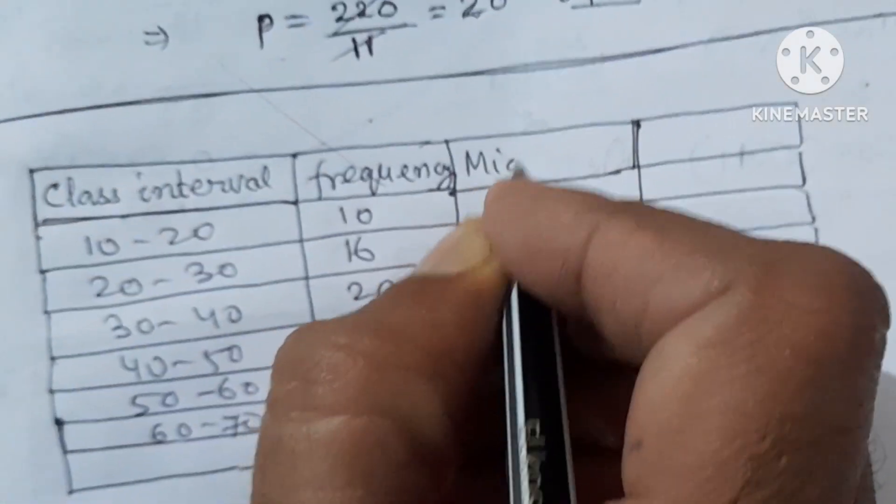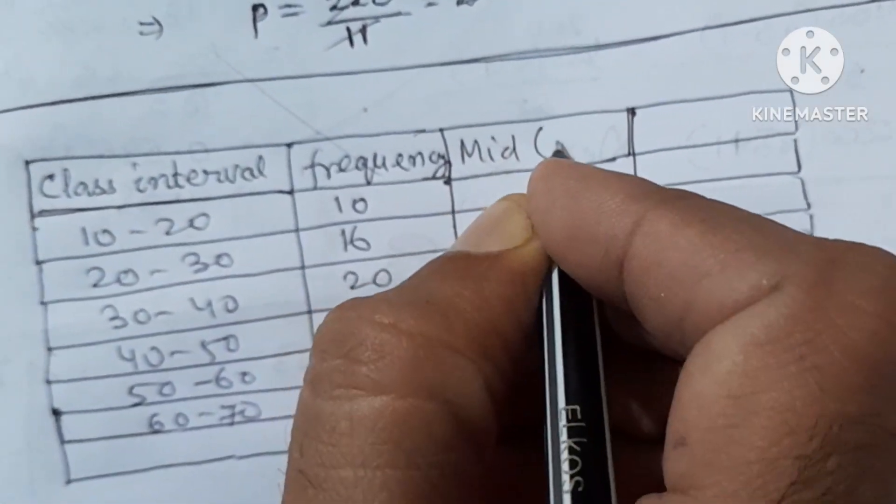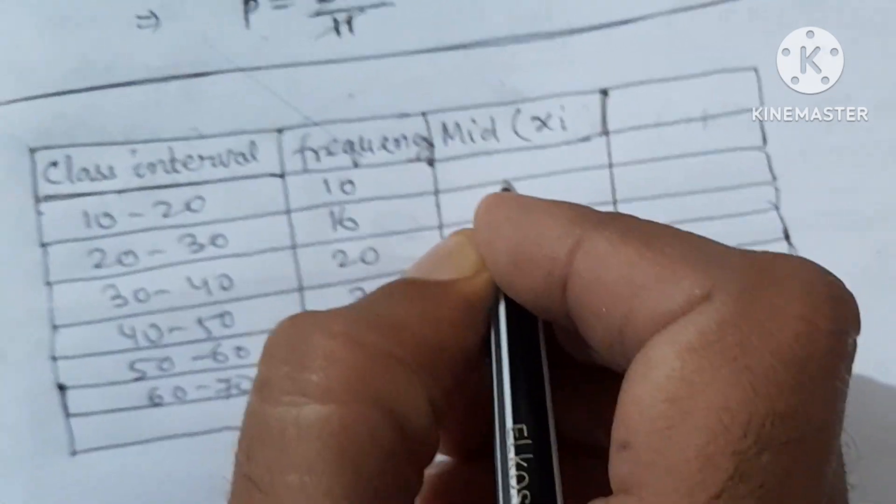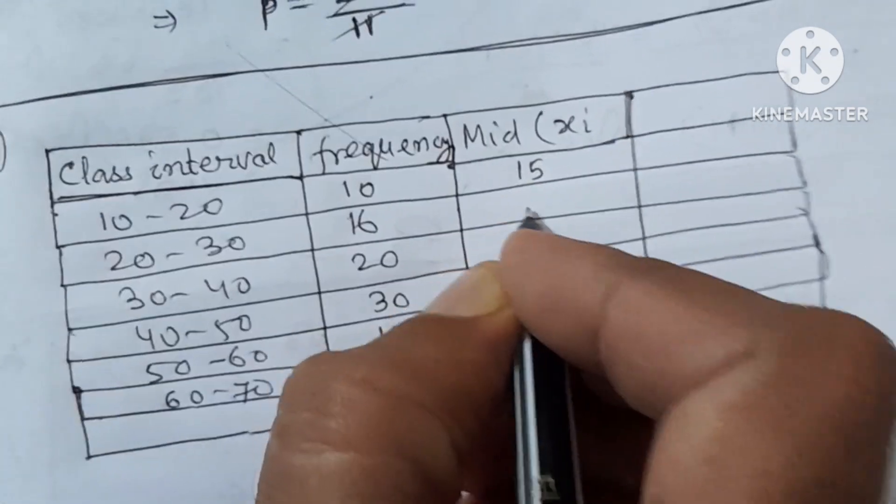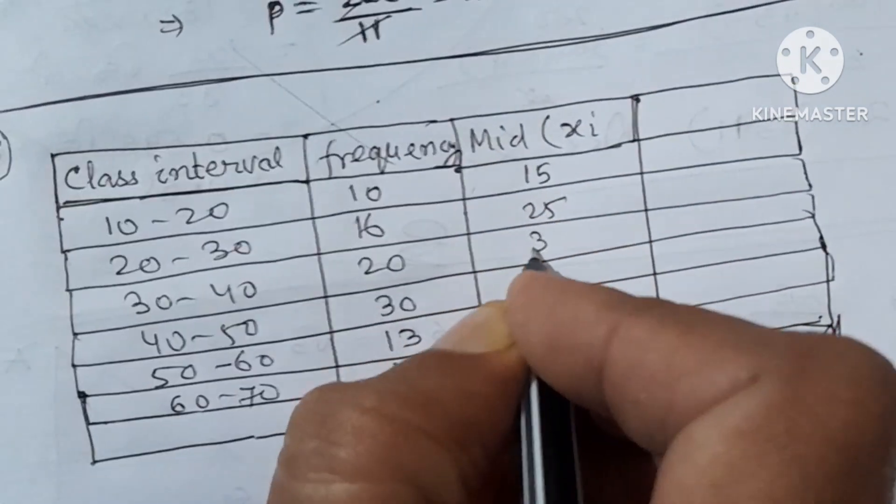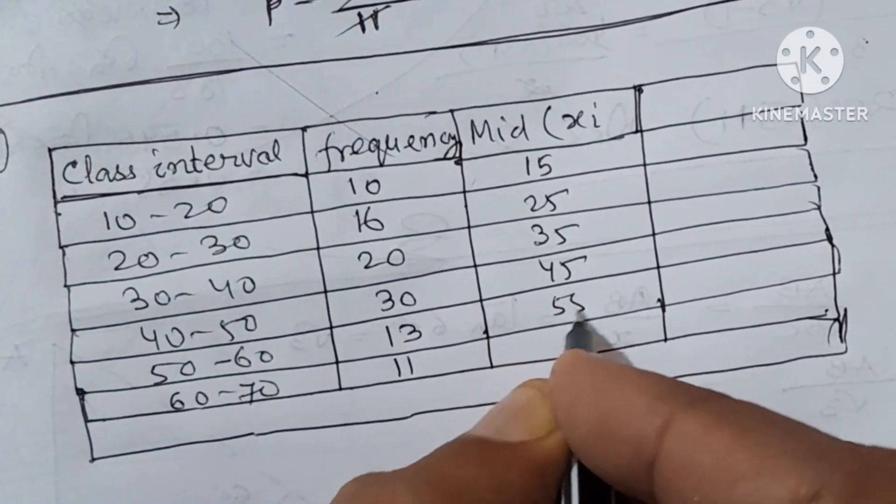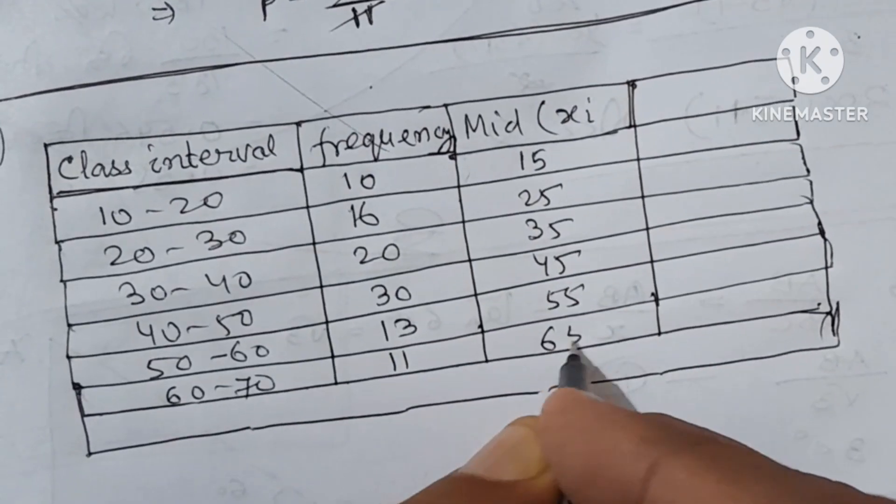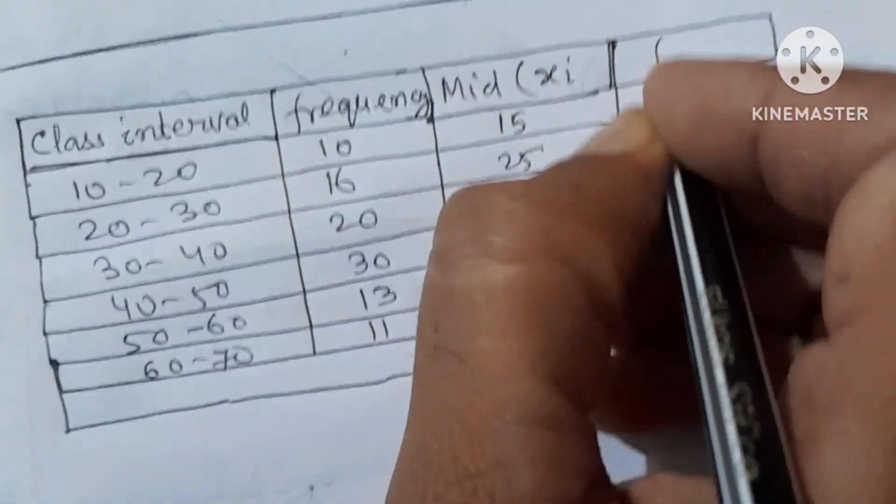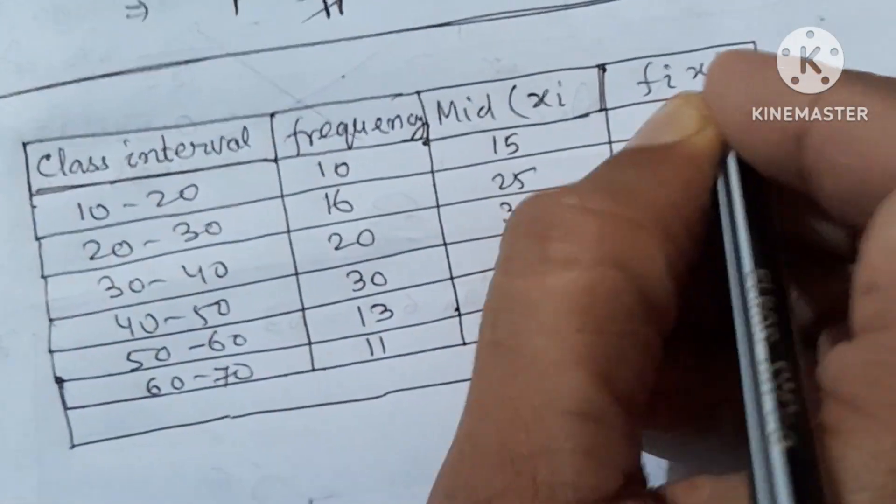Next we get the mid value of the class interval, written as XI. The mid value is 10 plus 20 by 2, that is 15, then next 20 plus 30 by 2 is 25, then 35, 45, 55, and 65.